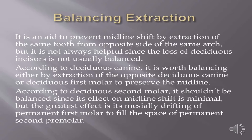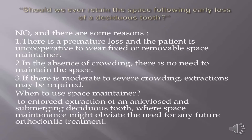For the deciduous canine, it is worth balancing by extraction of the opposite deciduous canine or deciduous first molar to preserve the midline. For the deciduous second molar, balancing is not recommended since its effect on midline shift is minimal; the greater concern is mesial drifting of the permanent first molar into the space of the permanent second premolar. Space maintainers are not always needed: if the patient is uncooperative, if there is no crowding, if moderate to severe crowding indicates extractions may be required, or if an ankylosed submerging deciduous tooth needs enforced extraction where space maintenance might obviate future orthodontic treatment.